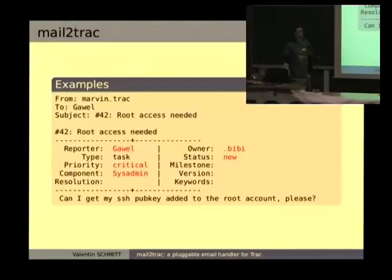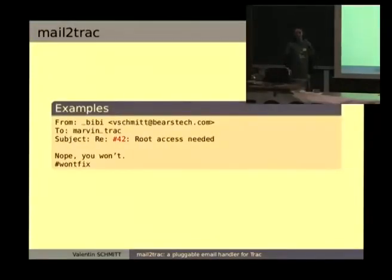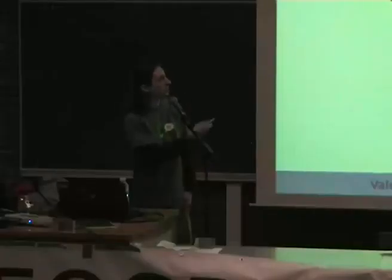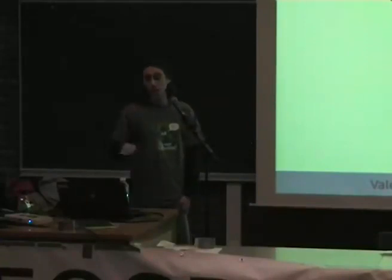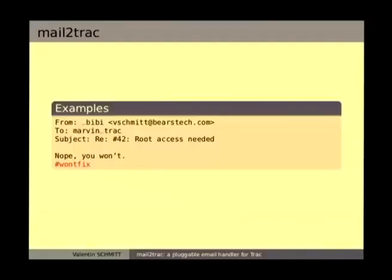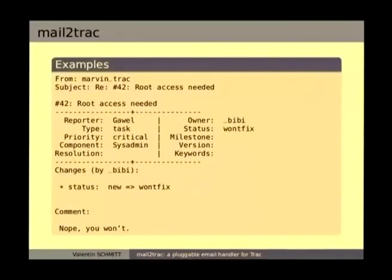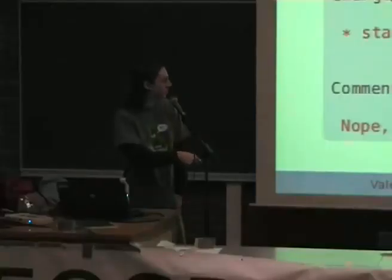I will reply to his ticket, obviously. What happens when I reply? The Mail2Trac plugin parses the subject and sees hash #42, which it identifies as an existing ticket. It also gets 'hash 1 fix', which is the status of the ticket. It sets it, and then it sends a notification with the ticket number, the status which has been modified, and it adds the comment.